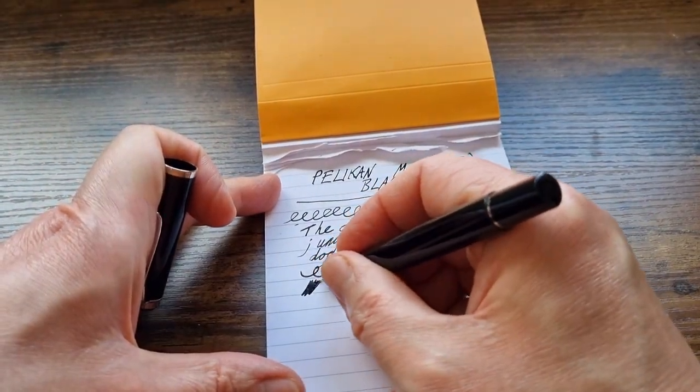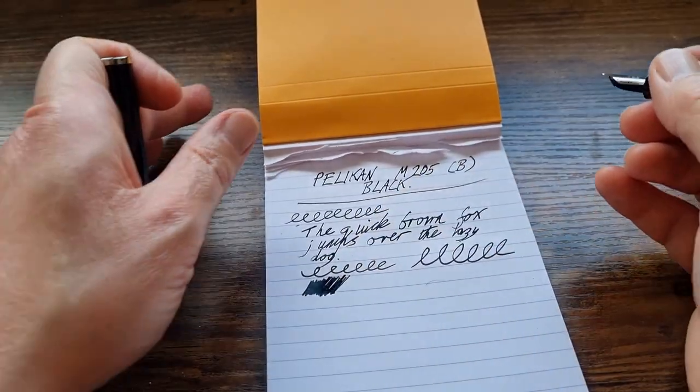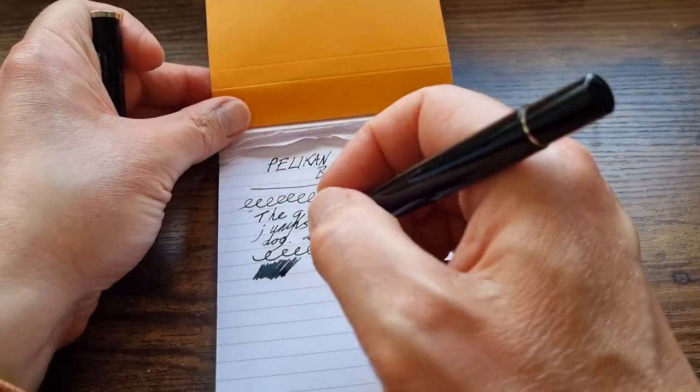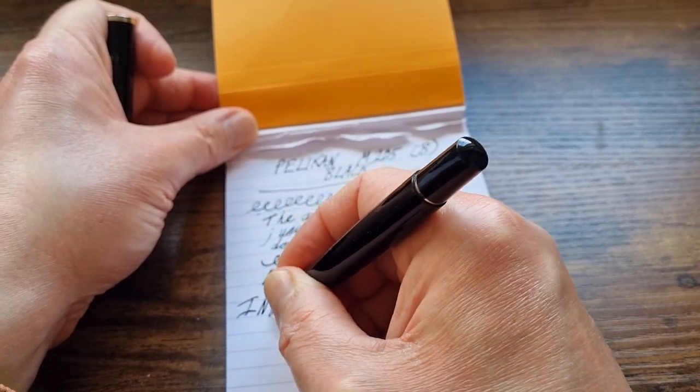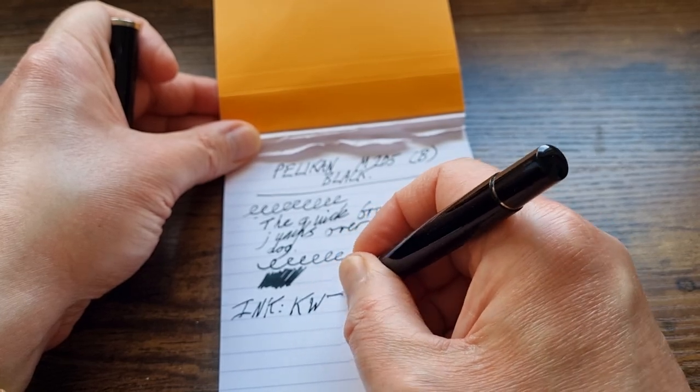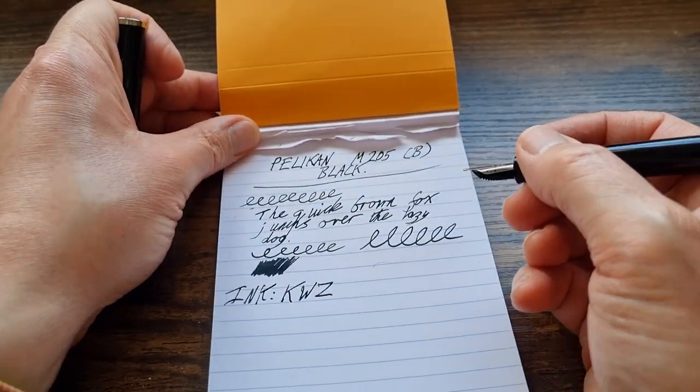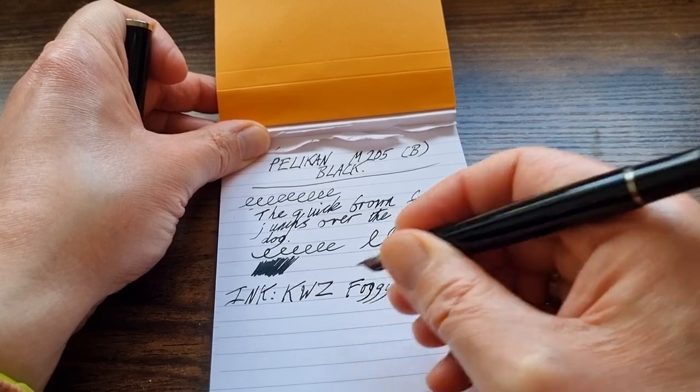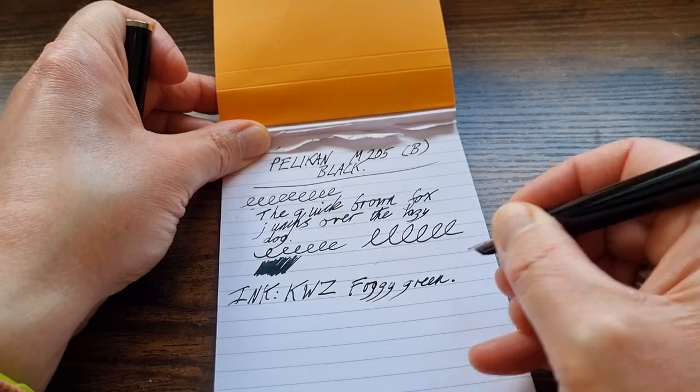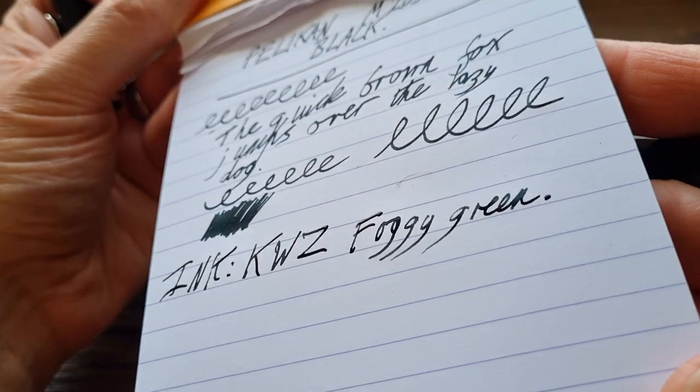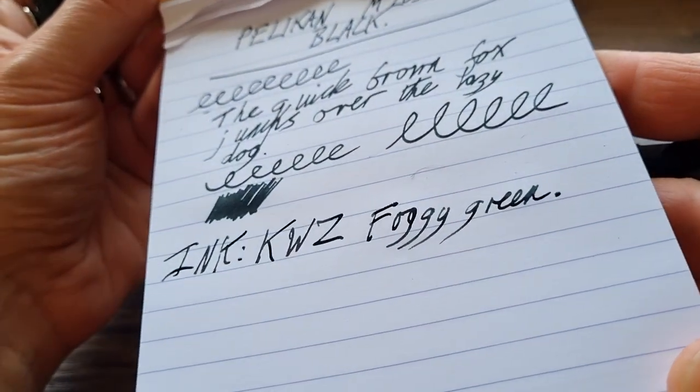It lays down lots of ink. Ink there. That's going to take quite a while to dry. So, it's a very wet nib. The ink, if you're interested, is another one of my favourite brands. It's KWZ. KWZ, depending on where you are. And, this is foggy green. It's a very dark green. I wouldn't say it's a green-black, but it's not far off. It's a very dark green ink.